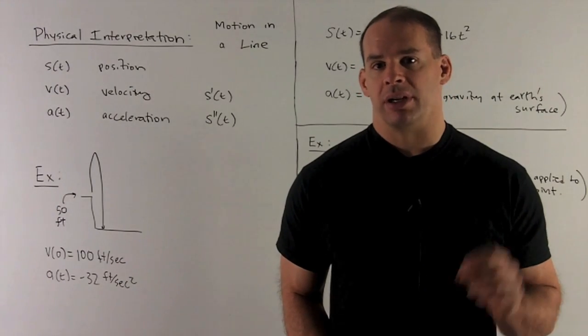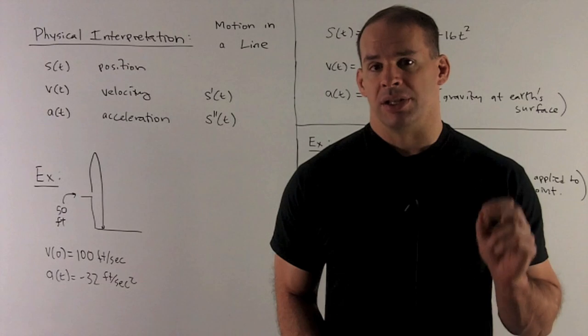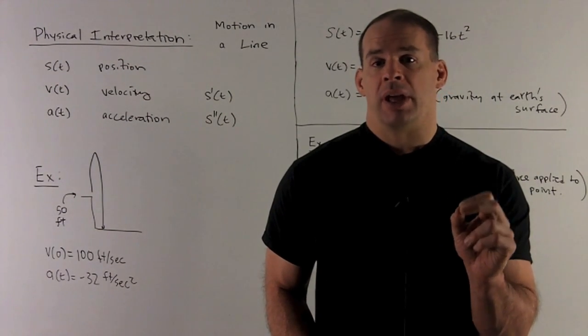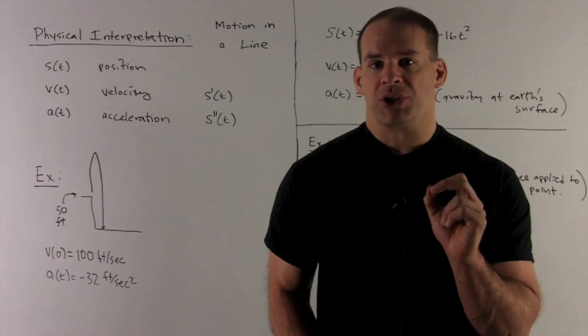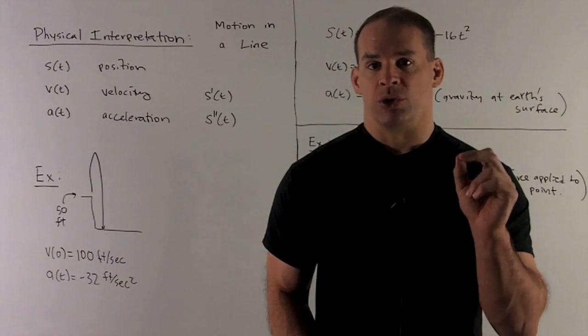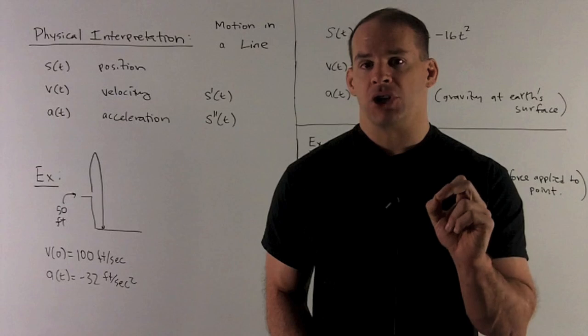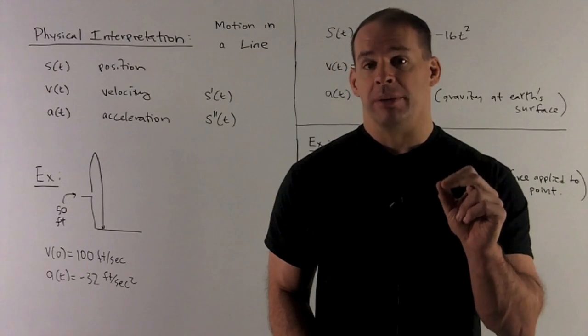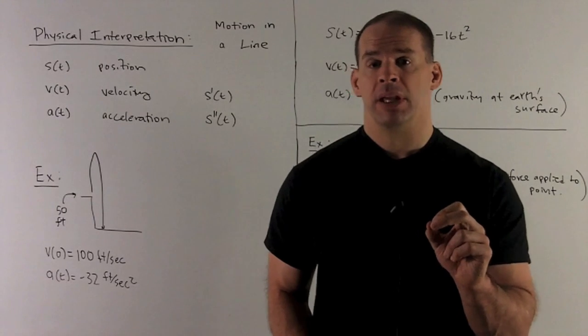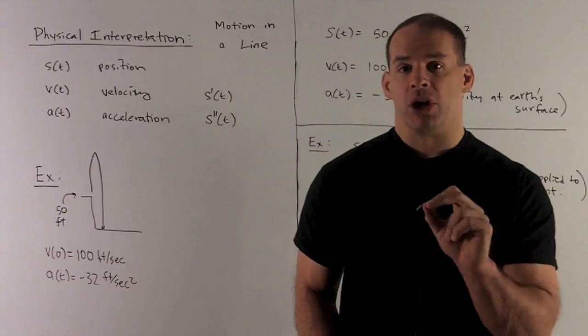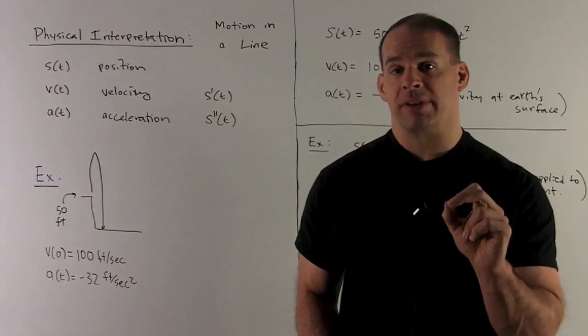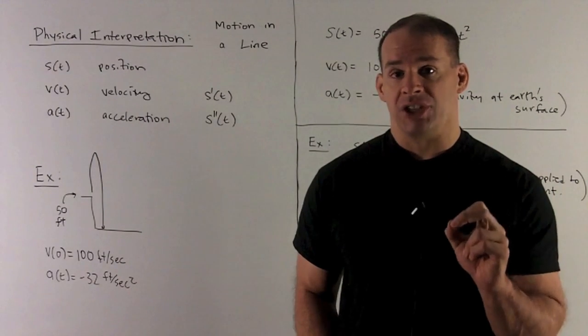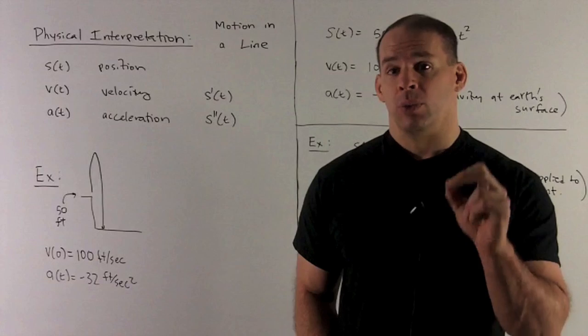So, what's the physical interpretation of the second derivative? Let's consider motion in a line. I'm going to have a position function, s of t, where t represents time. Take the derivative of that. I'll get the velocity function. That's just going to be the instantaneous change in position over change in time. Then, if I take the derivative of that function, I'm going to have our second derivative. That's what we're going to call the acceleration function. That's the instantaneous change in velocity with respect to time.